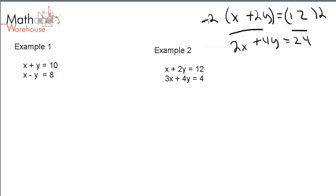Or I can multiply by negative 2 and get negative 2x plus negative 4y equals negative 24. Point being, if I have an equation, we can do the same thing to both sides and still have a true, valid, unchanged, equivalent equation.